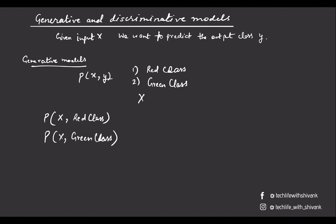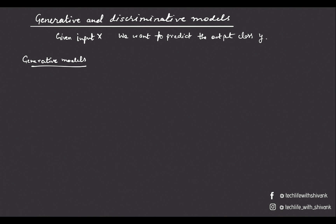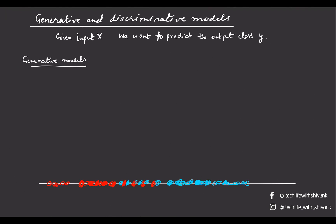Let's understand this with an example. Say we have two kinds of points: red points and blue points. To find the probability P(x, y), generative models use the formula: probability of y is calculated from the data, and probability of x given y is then estimated using the data points.